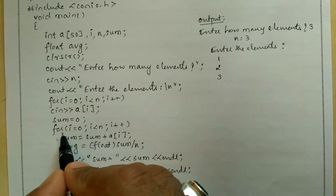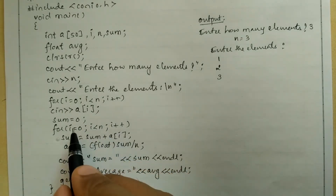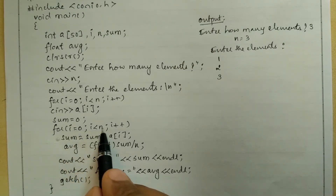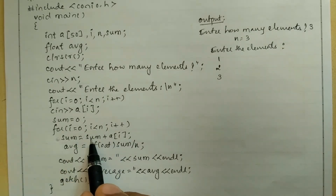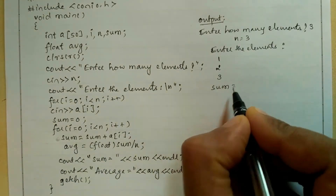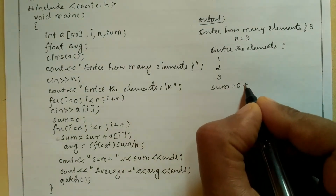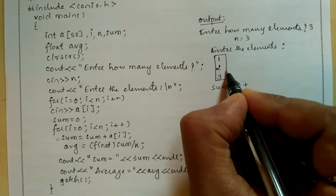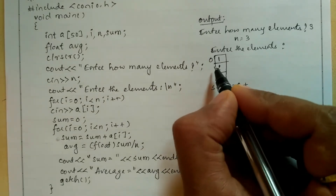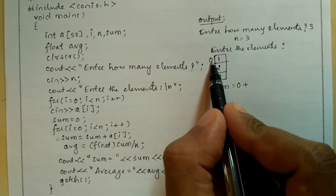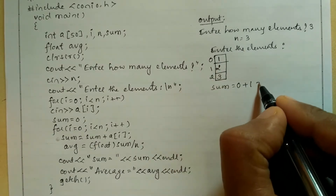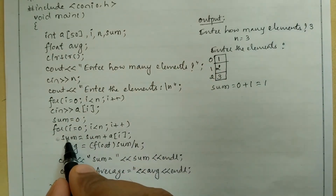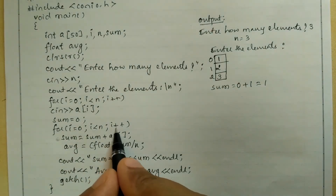Sum is reset to 0. For i equal to 0, i less than n: 0 is less than 3, condition is true, so this statement executes. Sum equal to sum (which is 0) plus a of 0 — a of 0 holds value 1 — so 0 plus 1 equals 1, stored in sum. Control transfers back to the for loop, i is incremented by 1 via i plus plus, so now i value is 1.